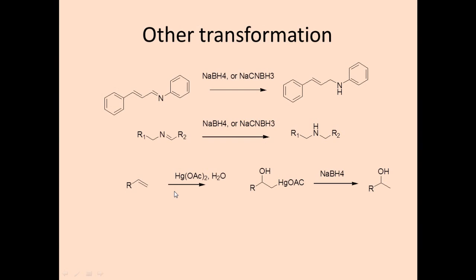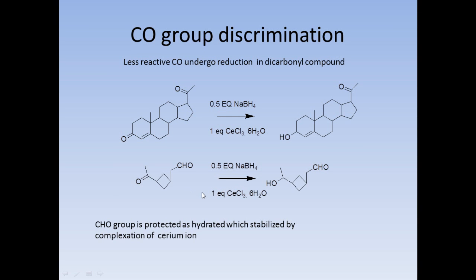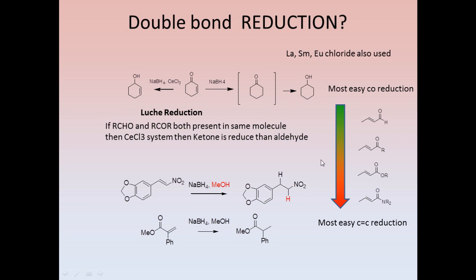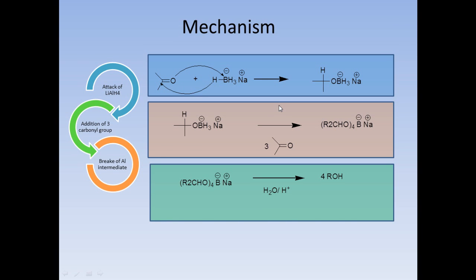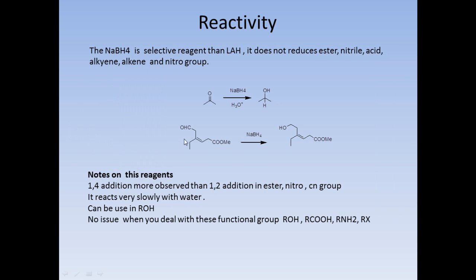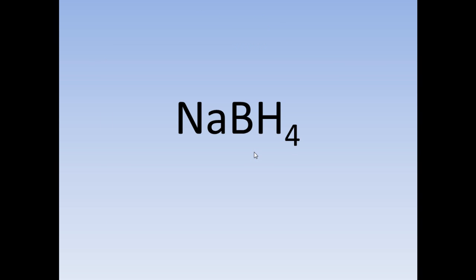I hope you understand this concept — less active versus more active, where 1,4-addition is possible and where 1,2-addition is possible. Remember the chemoselective transformations: how to activate, the mechanism and selectivity. Don't touch the double bond unless it is in conjugation with an ester or nitro group. Please like and subscribe to my channel. Thank you.